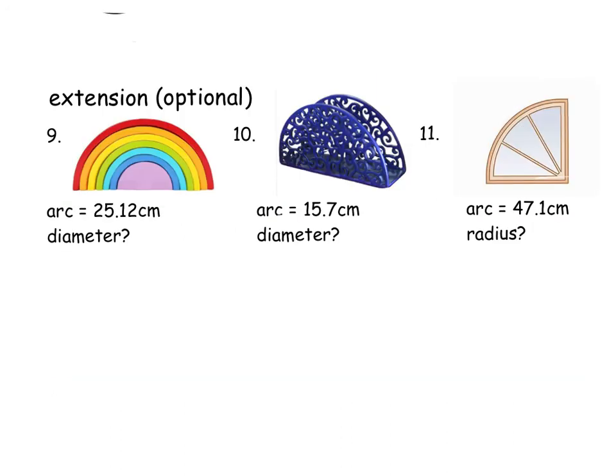And then these are the extension ones. These are optional. So these are like that table question where you have to find the diameter of the object given only part of the circumference. So I've given you the arc this time. So for the first one, that's your 25.12. You need to double that to get the circumference. On the second one, the curved bit's 15.7. You need to double it to get the circumference. And on the fourth one, be careful, this is your 47.1. What do you have to do to that number to get the circumference? It's not doubling it.